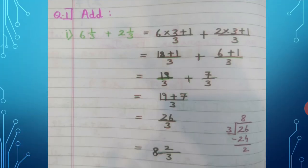Question 1: Add. The first sum is 6 and 1 upon 3 plus 2 and 1 upon 3. In the previous exercise you have learnt how to convert a mixed number into an improper fraction. We follow the same steps here.